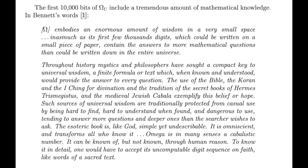Such sources of universal wisdom are traditionally protected from casual use by being hard to find, hard to understand when found, and dangerous to use, tending to answer more questions and deeper ones than the searcher wishes to ask. The esoteric book is, like God, simple yet undescribable. It is omniscient and transforms all who know it.